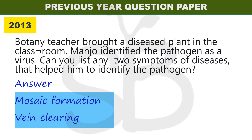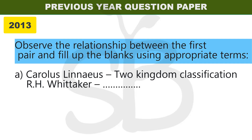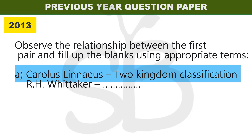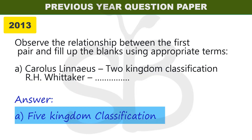2013 improvement exam: observe the relationship between the first pair and fill in the blanks. Carl Linnaeus gave the two kingdom classification. R.H. Whittaker gave the dash classification. The answer is the five kingdom classification.